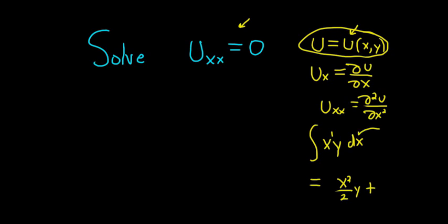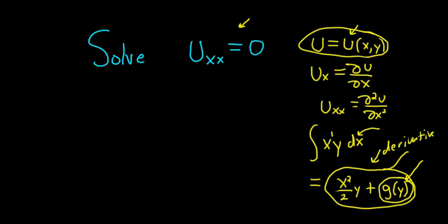And then you would add an unknown function of the other variables. So when we integrate with respect to x, we add an unknown function of y. And the reason is, when you differentiate this piece with respect to x, the derivative of this piece here, g of y, is actually 0, right? Because you treat everything else as constant. So if you go backwards, if you take the derivative of this with respect to x, the derivative of g of y is 0. So instead of just adding a plus c, we have to add an unknown function of the other variable.